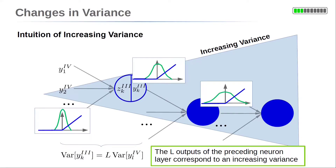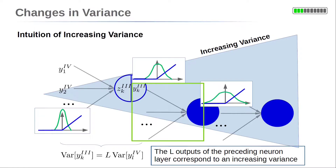We will later prove that the variance indeed increases by the number of incoming neurons. This increased variance is then transferred to the next layer, where many neurons with an increased variance are aggregated, so the variance further increases. The corresponding distributions of the outputs of a neuron are sketched by the green curves — it widens across the layers of the neural network. The variance of the neuron's output increases from the input towards the neural network's output.